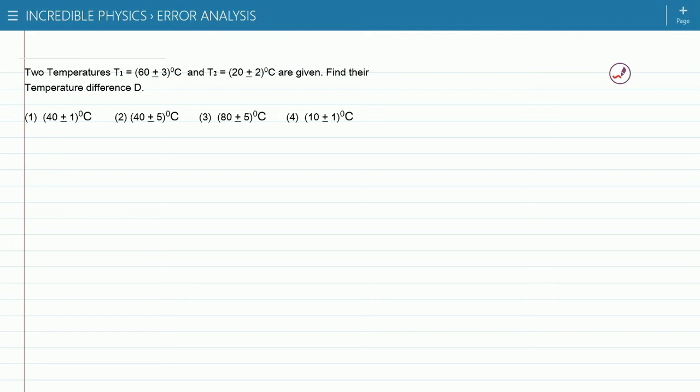And we have to find their temperature difference D. So we know that the difference can be obtained by subtracting the temperatures T1 minus T2.